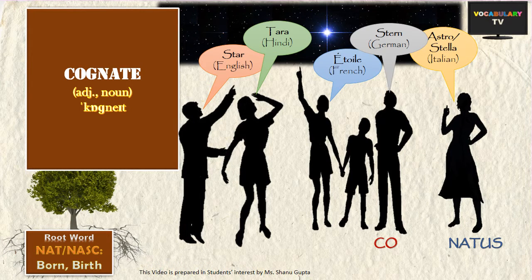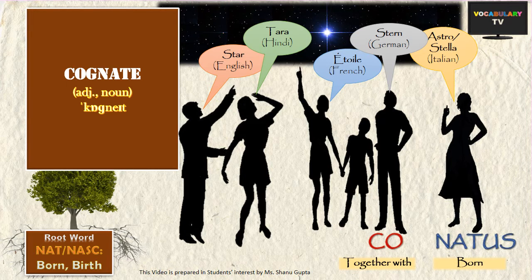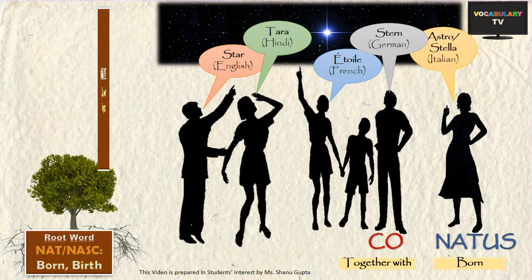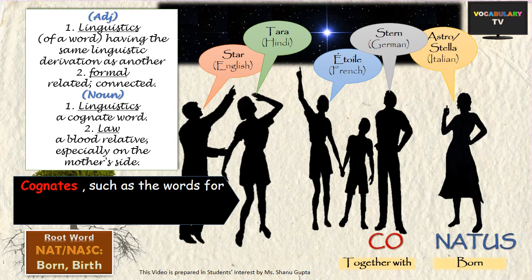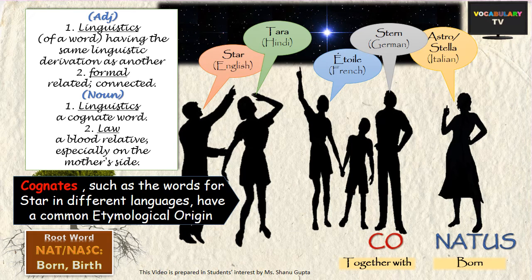Our last word is 'cognate,' which literally means 'born together.' In linguistics, cognates are words that have a common etymological origin. For example, the words denoting a star in various Indo-European languages — 'star' in English, 'tara' in Hindi, 'étoile' in French, 'Stern' in German, and 'stella' or 'astro' in Italian — are all cognates.